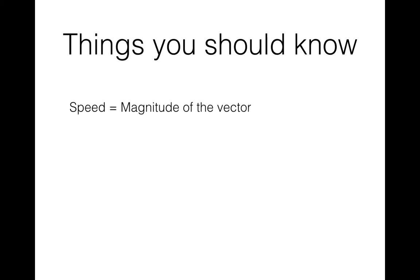Other things you should know: speed is the magnitude of the vector. To calculate the speed it will be the square root of the number in front of the i component squared plus the number in front of the j component squared — so the square root of i squared plus j squared.